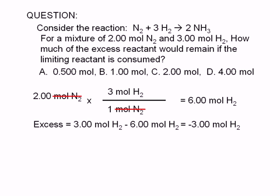The remaining amount of hydrogen would be the starting amount, 3 moles minus 6 moles, which equals negative 3 moles of H2.